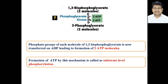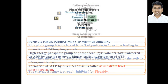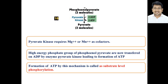After this, 3-phosphoglycerate is converted into 2-phosphoglycerate by the enzyme phosphoglycerate mutase, and then 2-phosphoglycerate is converted into two molecules of phosphoenolpyruvate by the enzyme enolase, which removes water molecules from 2-phosphoglycerate. Keep in mind that enolase is strongly inhibited by fluoride — if fluoride is present in the cell, it binds to enolase and inhibits the enzyme.